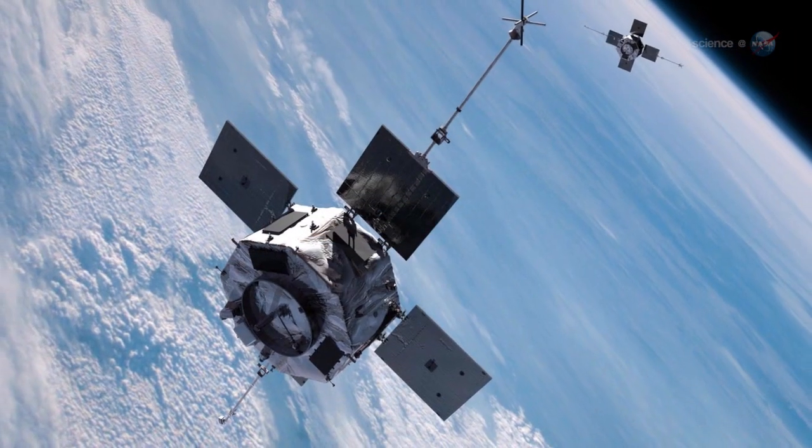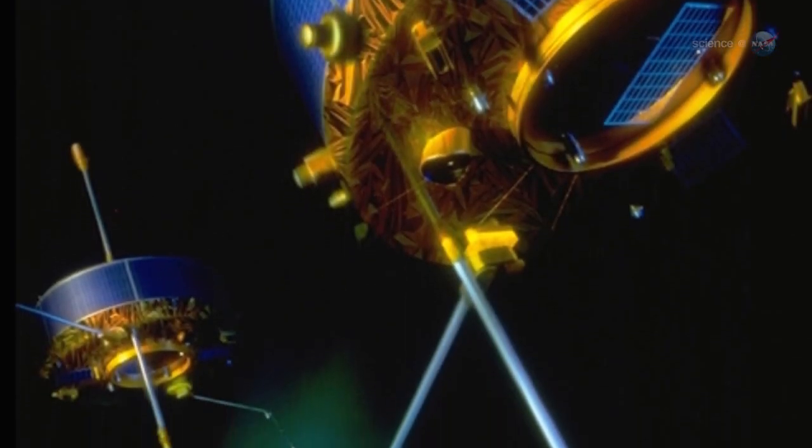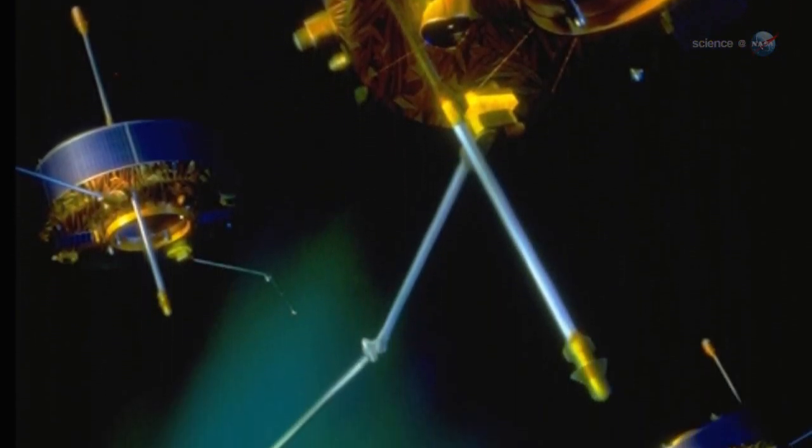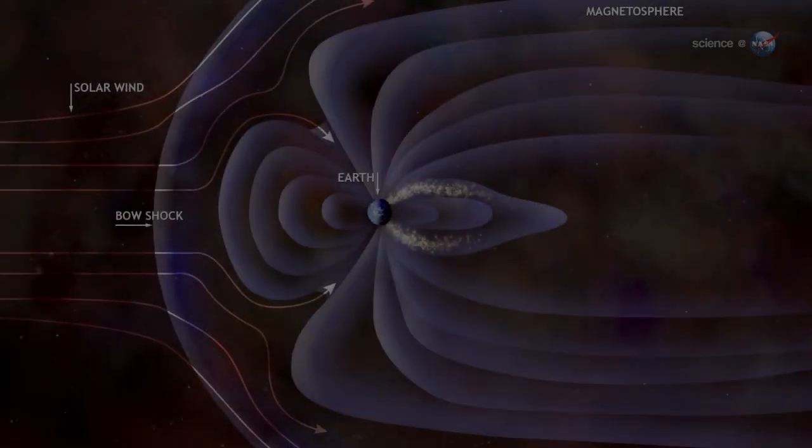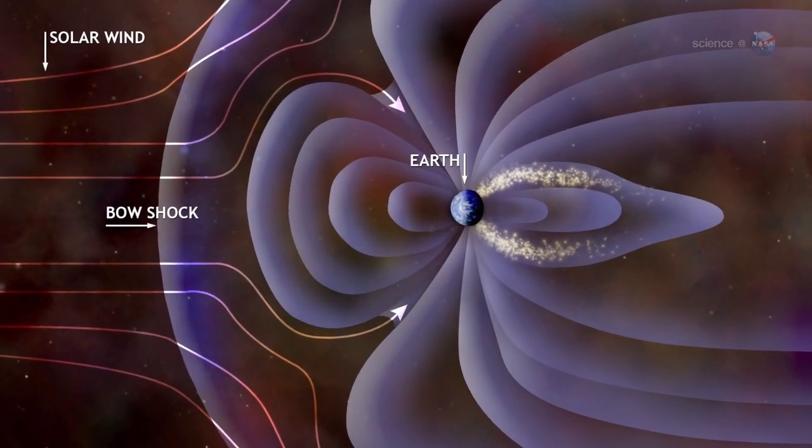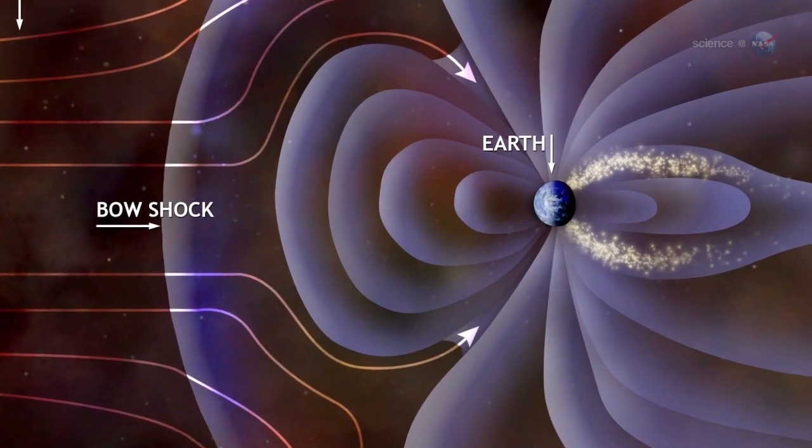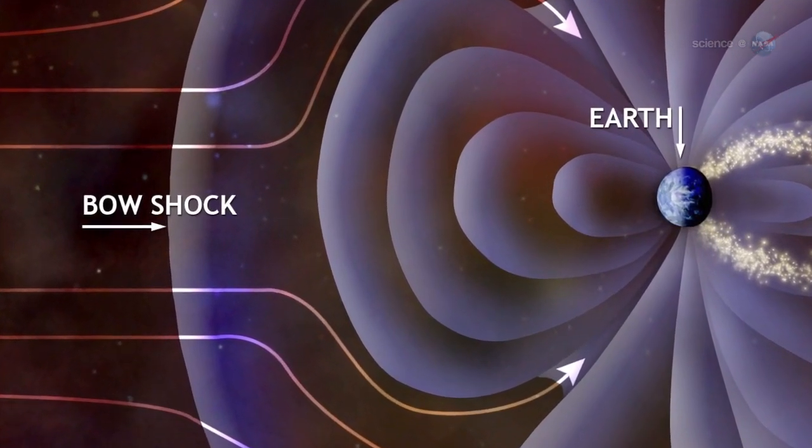Observations by NASA's THEMIS spacecraft and Europe's Cluster probes suggest that these magnetic portals open and close dozens of times each day. They're typically located a few tens of thousands of kilometers from Earth, where the geomagnetic field meets the onrushing solar wind.